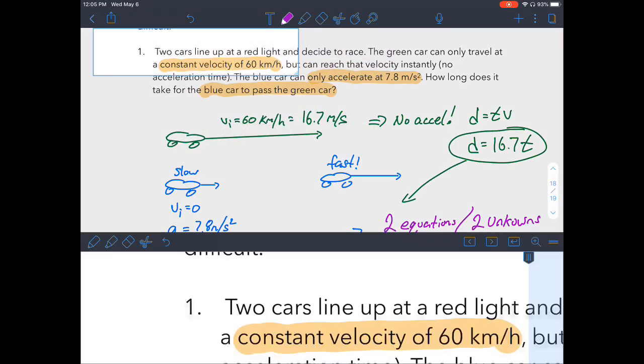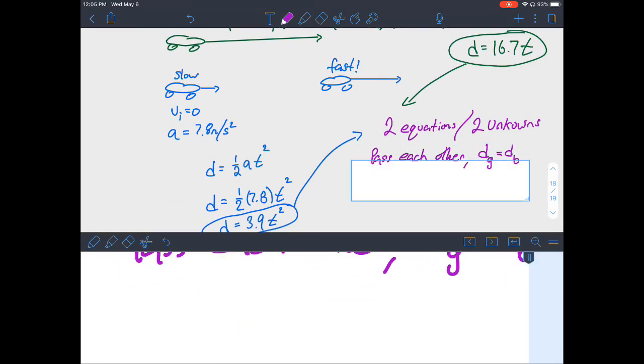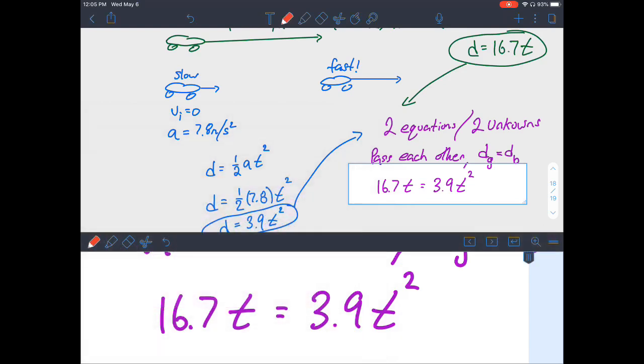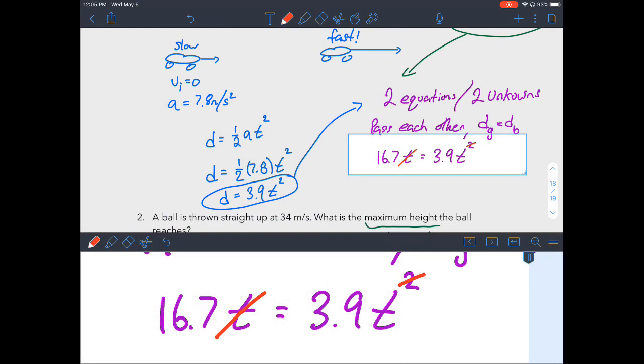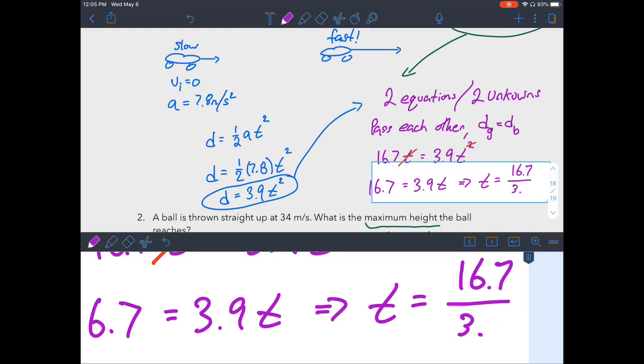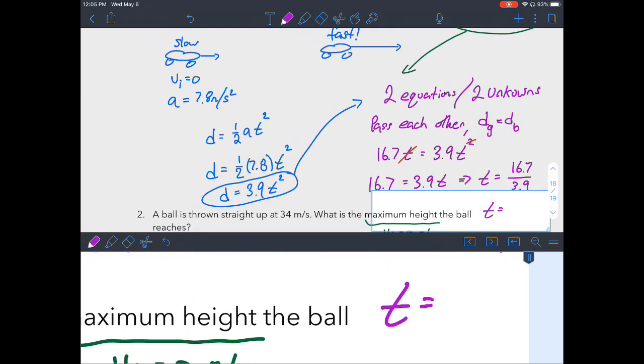So if we use that idea that the distance of the green car is going to be exactly the same as the distance of the blue car, we can say that 16.7 times time is going to equal 3.9 times t squared. And this right here is just a nice equation. We can cancel out the time and one of the times on the right side and then the time on the left side. And all we really have is a pretty simple equation. 16.7 is equal to 3.9 t. So our time is going to be 16.7 divided by 3.9. We take that, we punch that into our calculator, and we're going to get 4.3 seconds. So it's going to take 4.3 seconds for the two cars to have exactly the same distance, which means the blue car has now overtaken the green car.